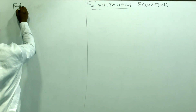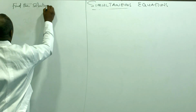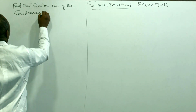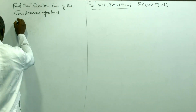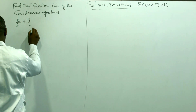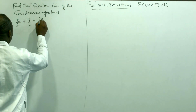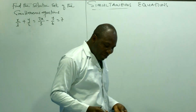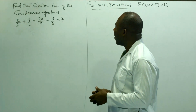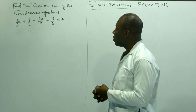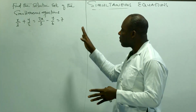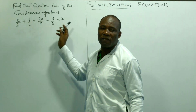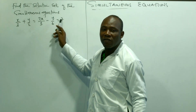This question says to find the solution sets of the simultaneous equations: x/3 + y/2 = 2x/3 - y/6 = 7. This means the first equation is x/3 + y/2 = 7, and the second equation is 2x/3 - y/6 = 7.